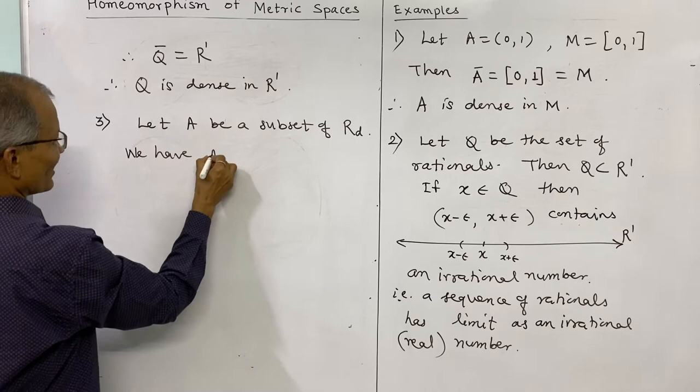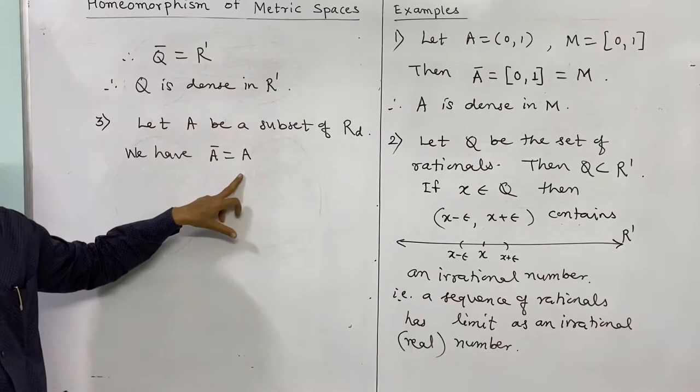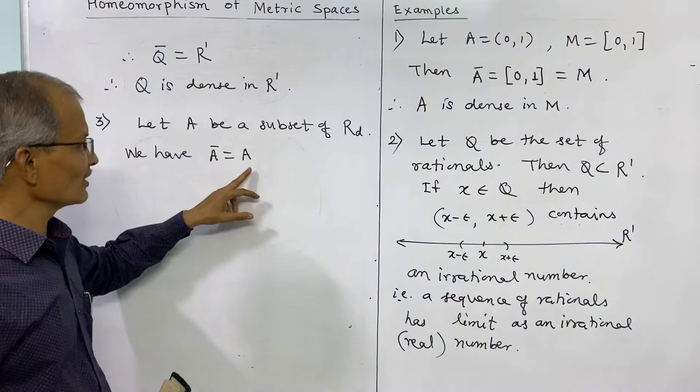In a discrete metric space, every singleton set is both closed and open. Therefore the closure of A equals A itself. If A is a proper subset of RD, then closure of A will not equal RD.